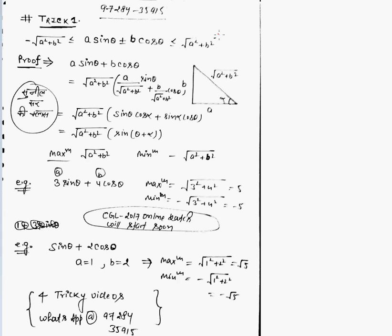Let us see the first trick: a sin θ plus minus b cos θ. Combination of sine and cosine, linear, no power is there, only coefficients are there, either plus or minus, both can be present here.